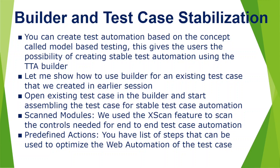The test case Builder has two components: the left pane and the right pane. The right pane contains all the actions required to automate or test the application, and the left pane contains scanned modules and predefined actions. These scanned modules - we used the scan feature to scan the controls needed for end-to-end test case automation. I recommend you visit my previous session before watching this one.